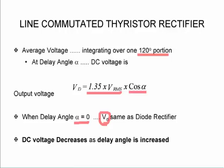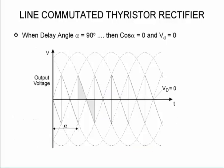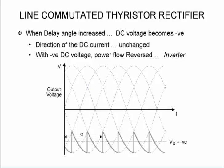So our DC voltage decreases as the delay angle is increased. So if that angle is 90 degrees, then our DC output voltage is equal to zero because this portion above the line and that below the line is exactly equal, which will then give us a zero average voltage.